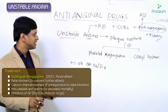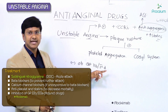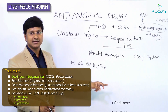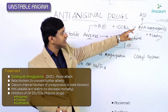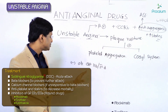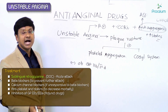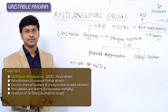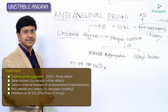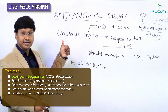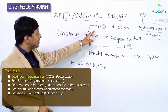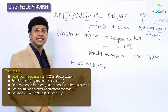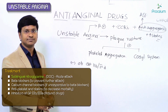Examples of glycoprotein 2b/3a inhibitors include Abciximab, Tirofiban, and Eptifibatide. These drugs act as adjuncts to anti-aggregants such as aspirin and clopidogrel. So in patients with unstable angina, along with sublingual nitrate for acute attack, beta blockers, calcium channel blockers, anti-aggregants, and high-dose statins, we also give glycoprotein 2b/3a inhibitors.